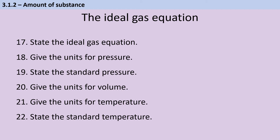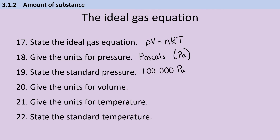The ideal gas equation is PV = nRT, and pressure is measured in pascals. It's often given in kilopascals in the question, so you will need to convert. The standard pressure is 100,000 pascals. Volume is measured in metres cubed — a big one that catches students out, because you're so used to converting to decimetres cubed for titrations and concentrations. But for the ideal gas equation, we need metres cubed instead.